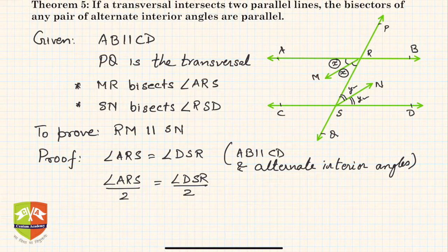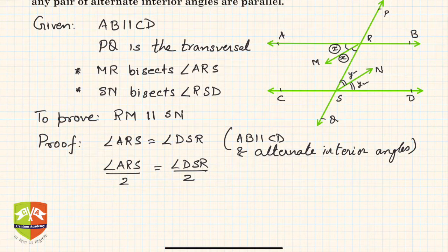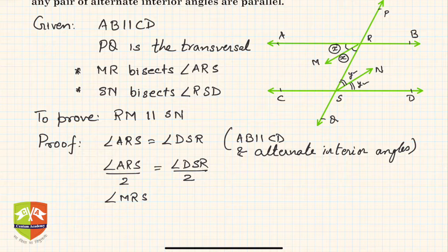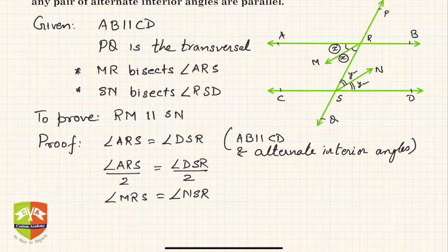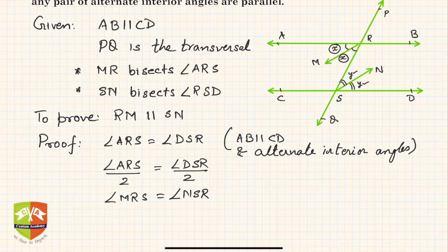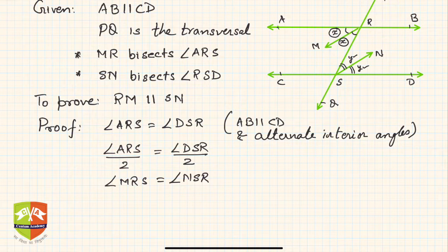Since MR is the bisector, angle MRS equals angle NSR, because angle MRS is ARS divided by 2, and angle NSR is DSR divided by 2. So this is nothing but x equals y.